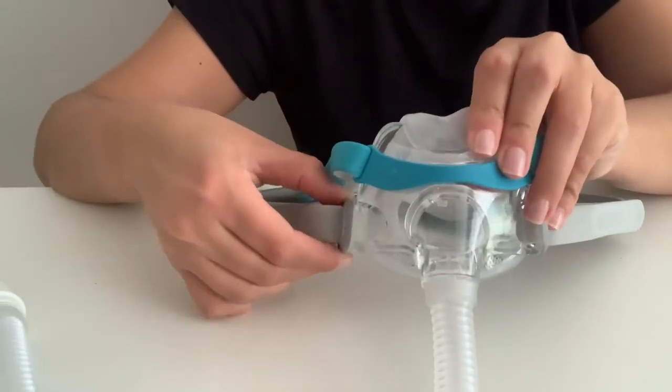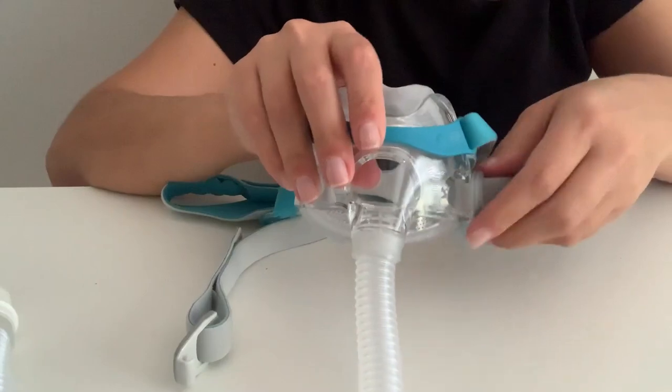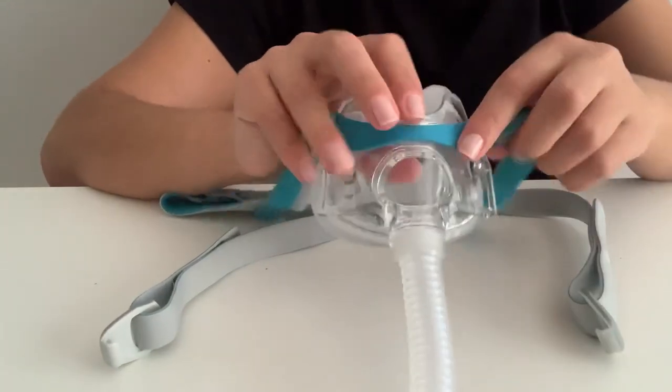To disassemble the Evora full, first take apart the headgear by pulling the clips off the frame and unclip the top.